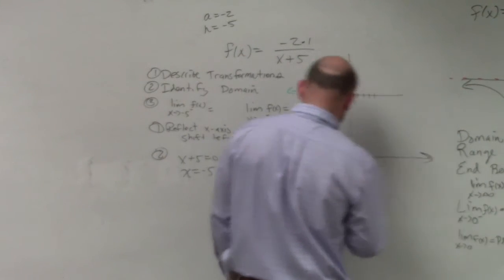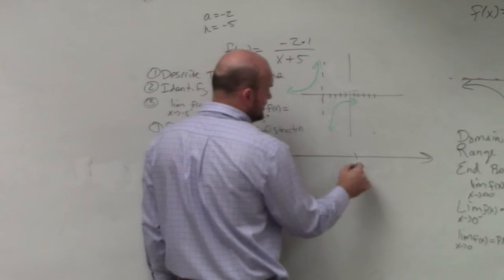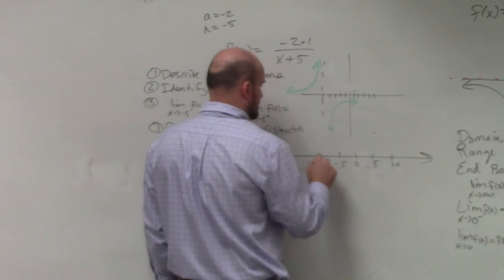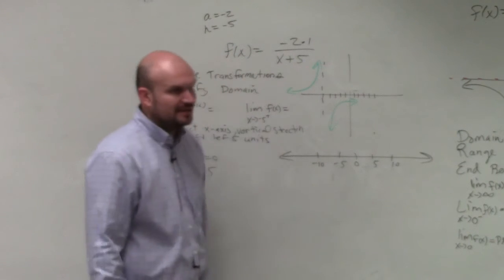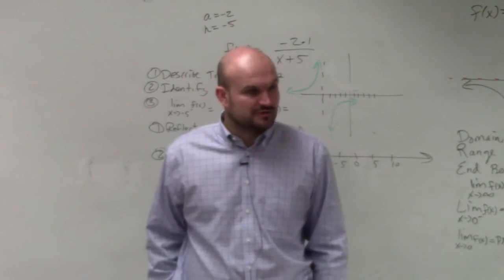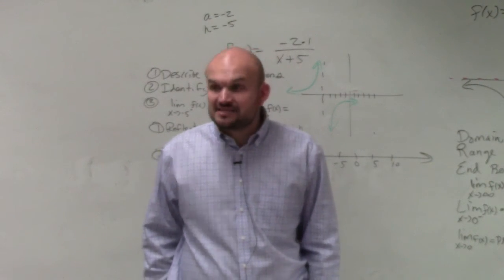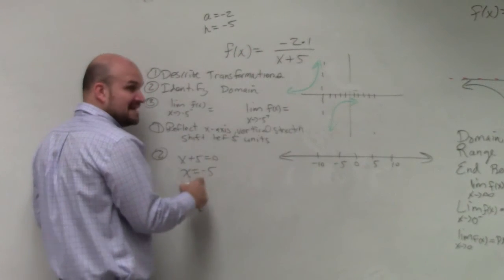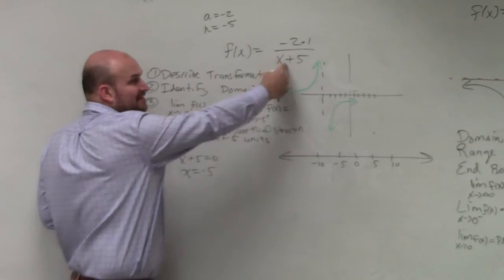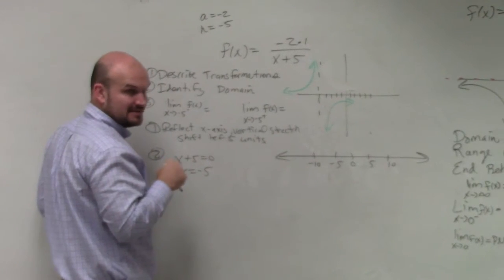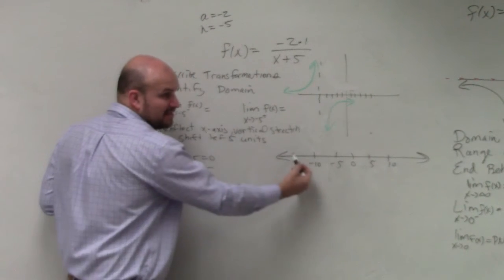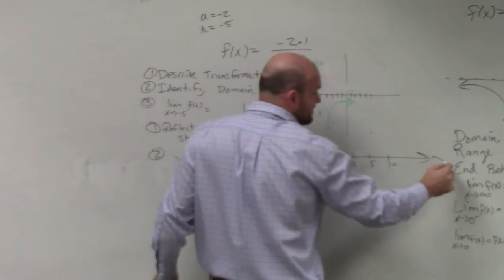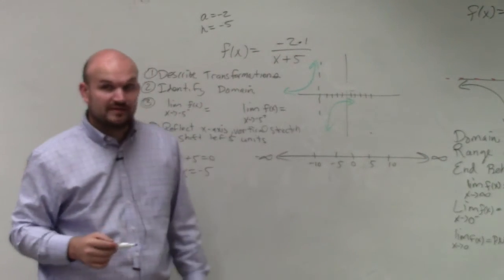Again, just to re-teach this one last time, let's use a number line. Let's pretend this number line has all the values, all real numbers. Now, we said all numbers are in the domain except for -5. Why? Because -5 makes the denominator 0. Correct? So here's the number line. This number line goes infinitely to the left to negative infinity, and infinitely to the right to positive infinity.